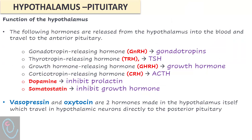The hypothalamus releases GnRH, which stimulates the anterior pituitary to release gonadotropins — FSH and LH. It also secretes TRH to produce TSH, growth hormone-releasing hormone to stimulate growth hormone release, and corticotropin-releasing hormone to stimulate ACTH from the anterior pituitary. Dopamine from the hypothalamus inhibits prolactin release. So these four hormones are stimulatory, while dopamine is inhibitory. Somatostatin also inhibits growth hormone release.